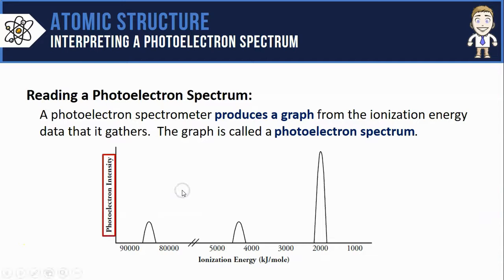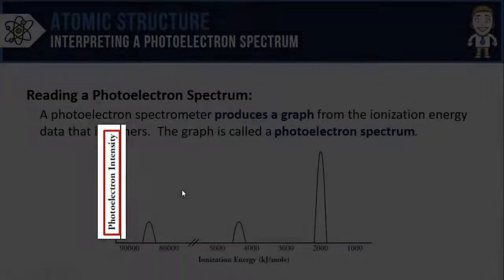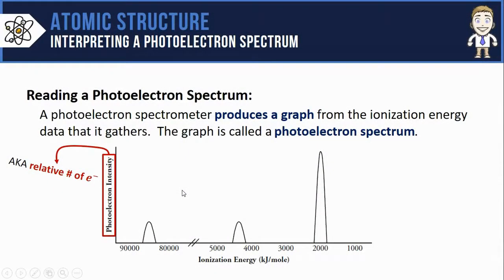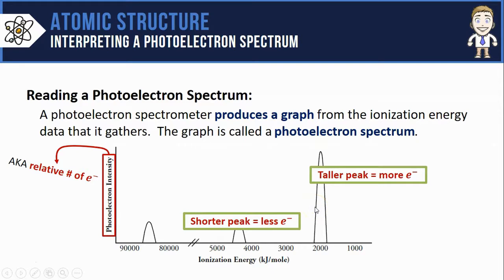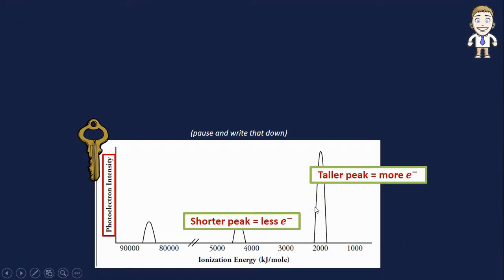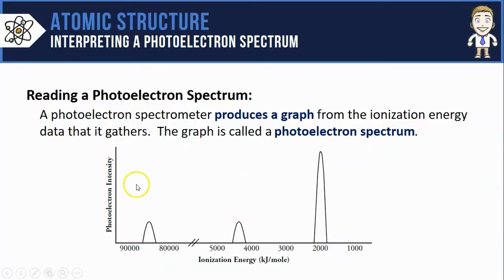Now let's talk about the vertical axis labeled here as photoelectron intensity. Sometimes you'll also see this labeled as relative number of electrons, which is actually a better description of what it's telling you. Here we can see a very tall peak. The taller the peak equals more electrons or the shorter the peak equals less electrons. This makes up some more key ideas. Again, make sure you take some time to pause and write them down.